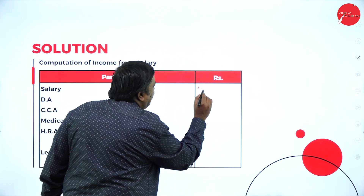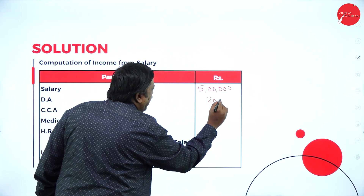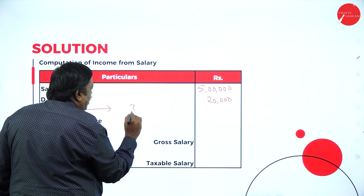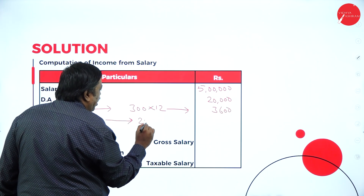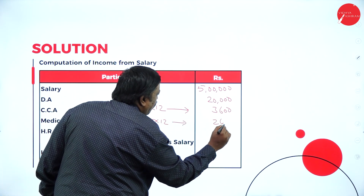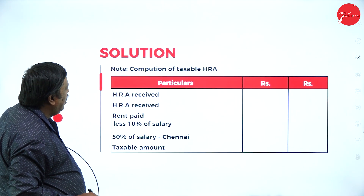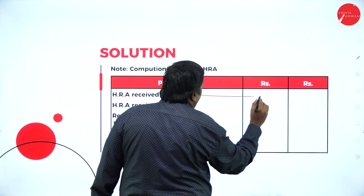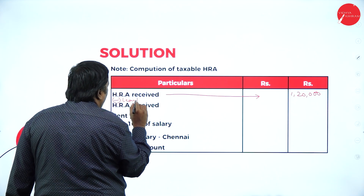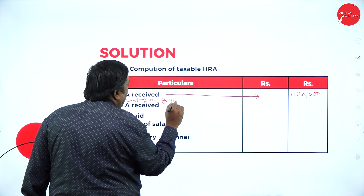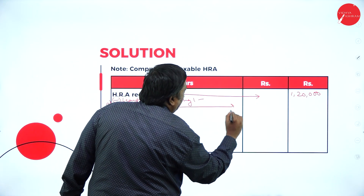Solution: Salary is given directly as five lakhs per annum. DA is 20,000 — write directly. CCA: 300 into 12 equals 3,600. Medical allowance: 200 into 12 equals 2,400. For HRA, working note number one: HRA received from the employer is one lakh twenty thousand.